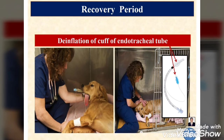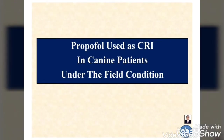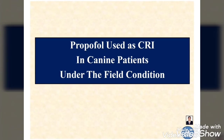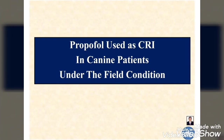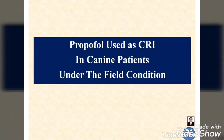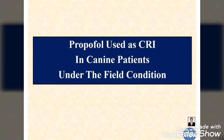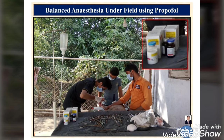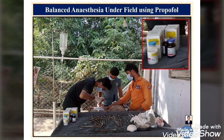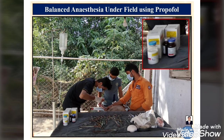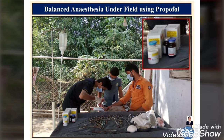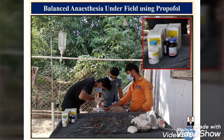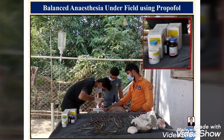Some photographs of the balanced anesthetic protocol using propofol as CRI in canine patients under field conditions are shown to increase confidence regarding its use in the field. Successfully performed amputation of a limb under general anesthesia using butorphanol and diazepam as pre-anesthetic, induced by propofol till effect, and maintained by propofol as CRI in canine patients under field conditions without any complications.